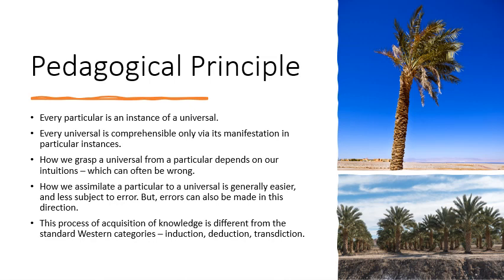A specific tree in all its detail as a very particular entity cannot be understood because there are just too many such entities to be comprehensible. This idea of looking at one particular instance and extending it to a universal, and similarly trying to understand a universal in terms of its exemplification via concrete aspects, is different from the standard methodologies discussed in the West — which are induction, deduction, and transduction — for the acquisition of knowledge.